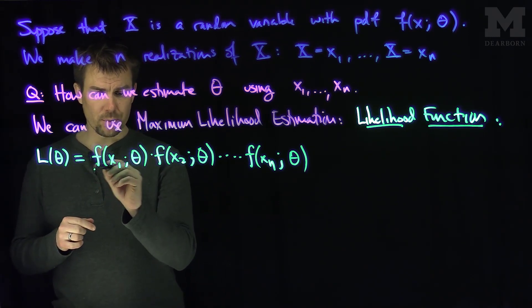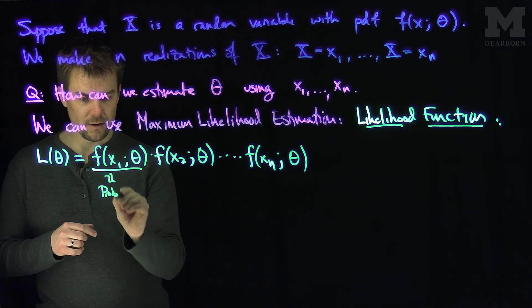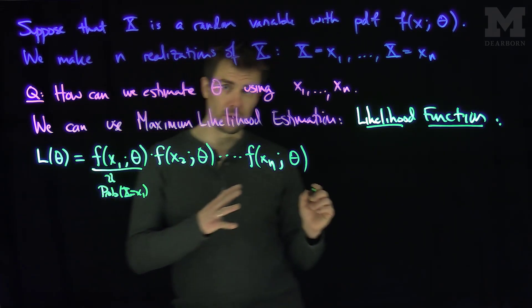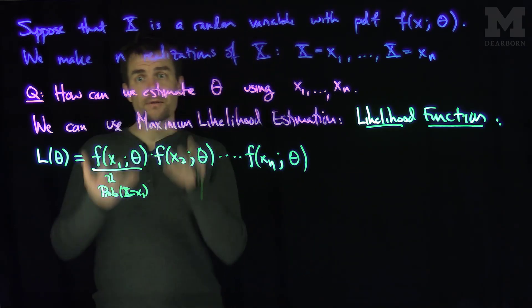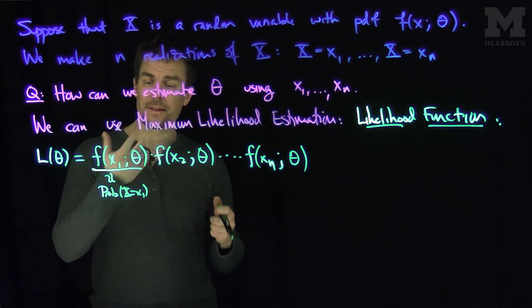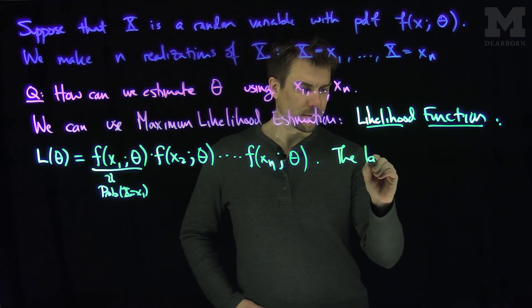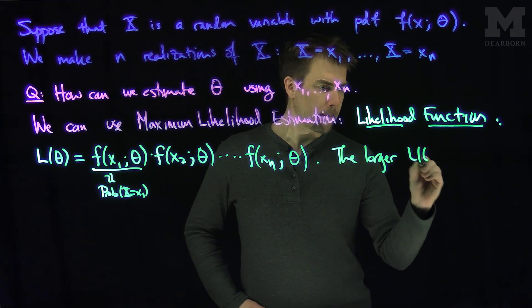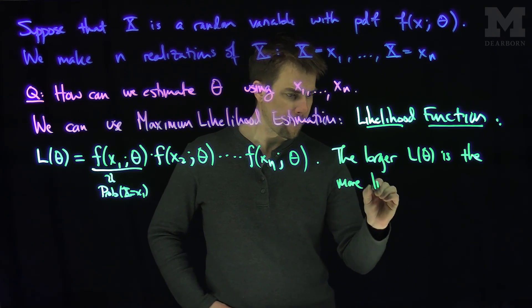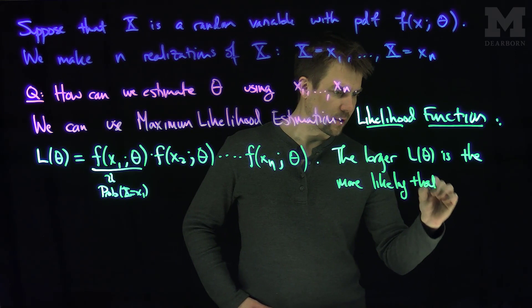We can think of this as approximately the probability that x equals x1 times all these probabilities. What we're doing here is: the larger L(θ) is, the more likely it is that the theta parameter was chosen correctly. The larger L is, the more likely that theta was a good estimate.